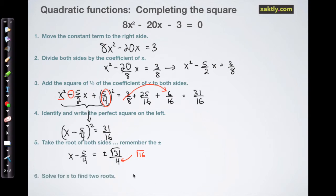And so finally we solve for our two roots just by moving that 5/4 by addition to the right side, so we end up with roots of 5 ± √31 all over 4, and those are the exact roots of this function.